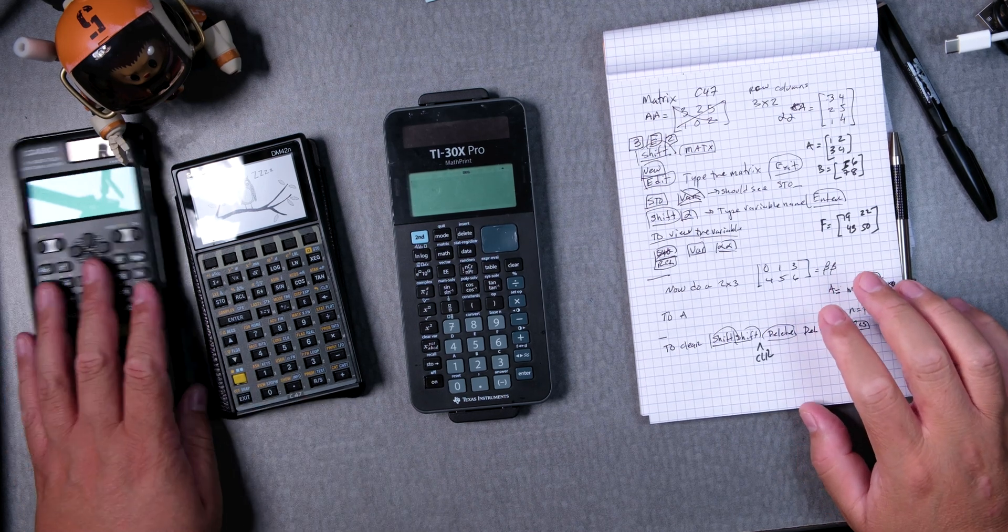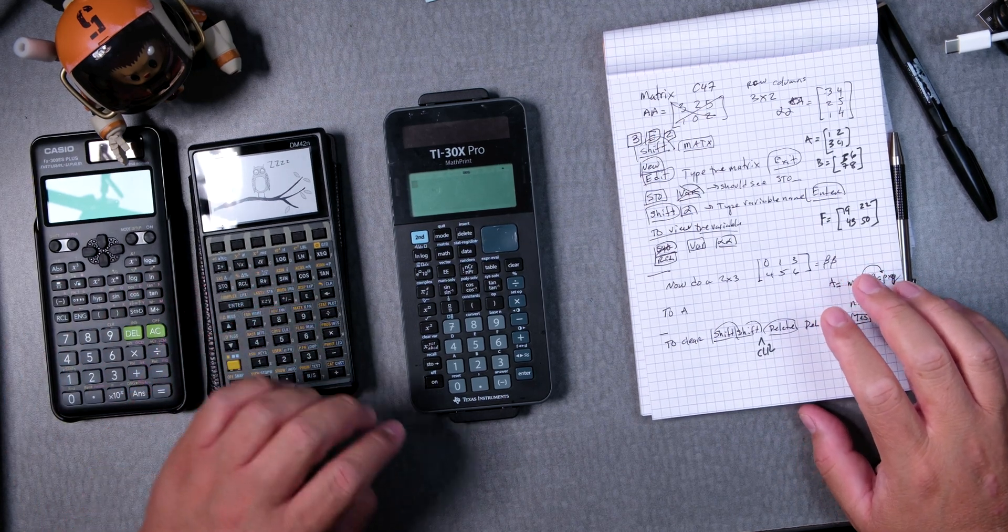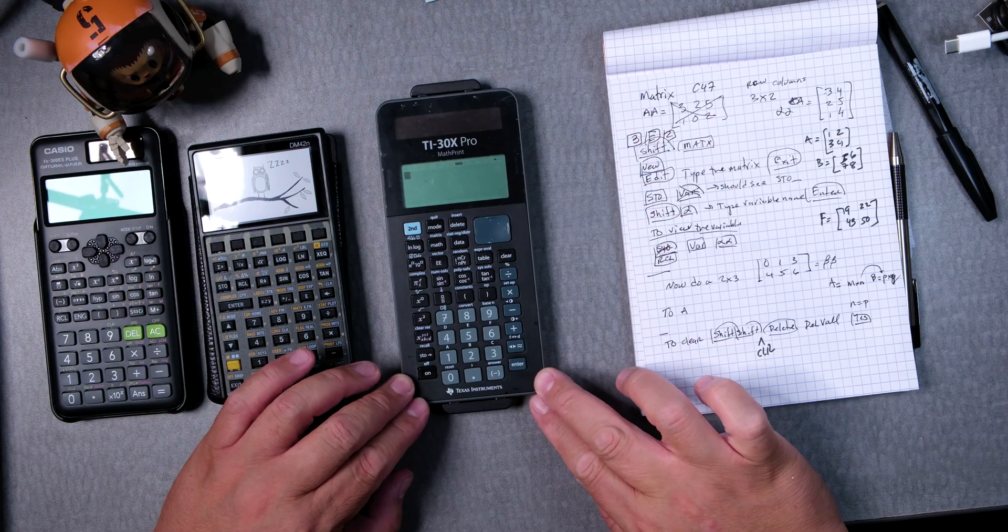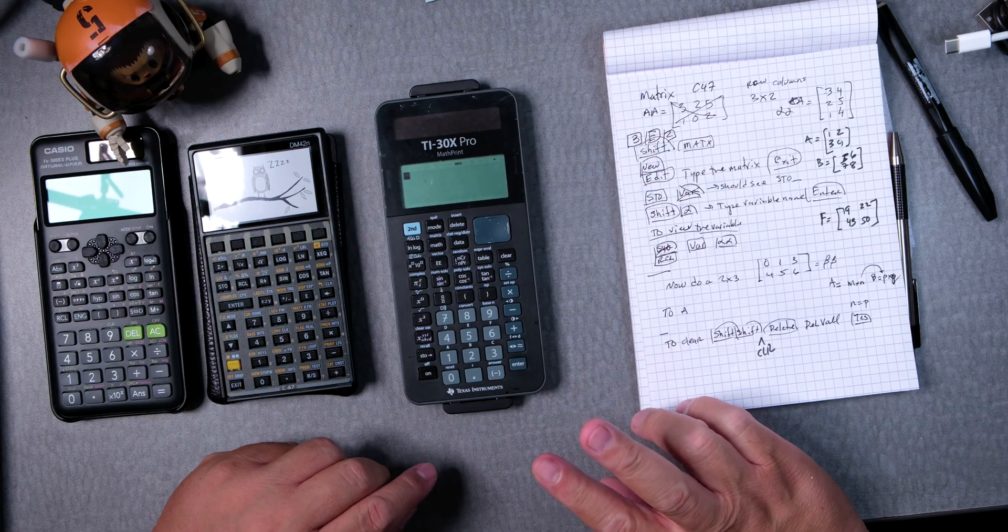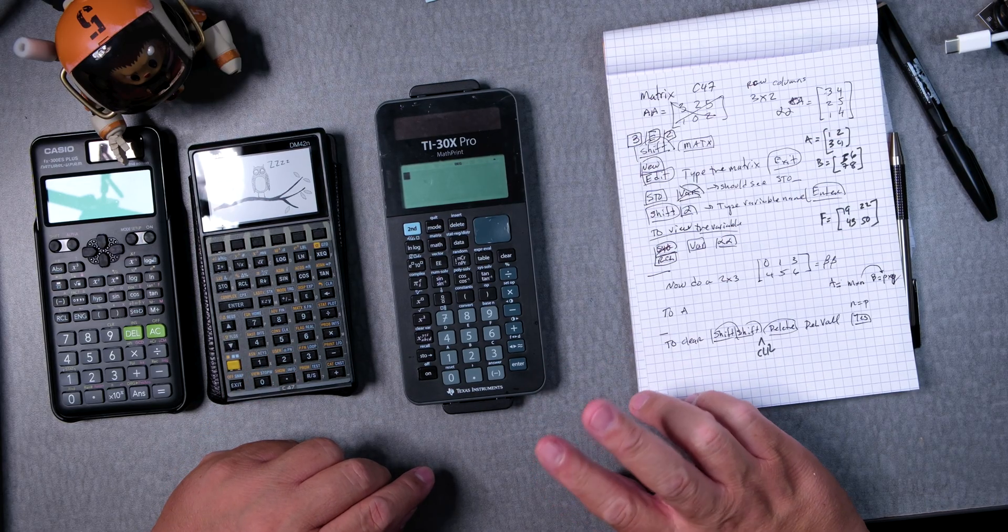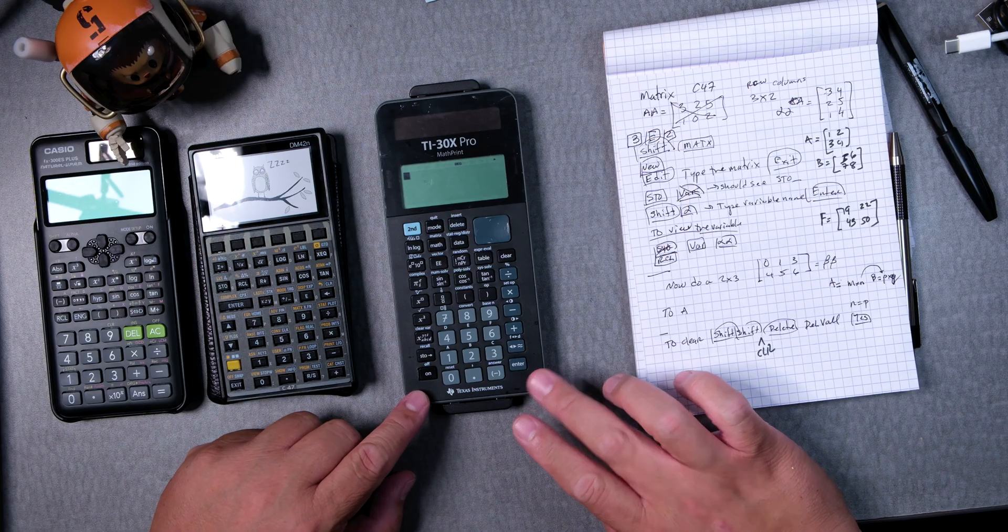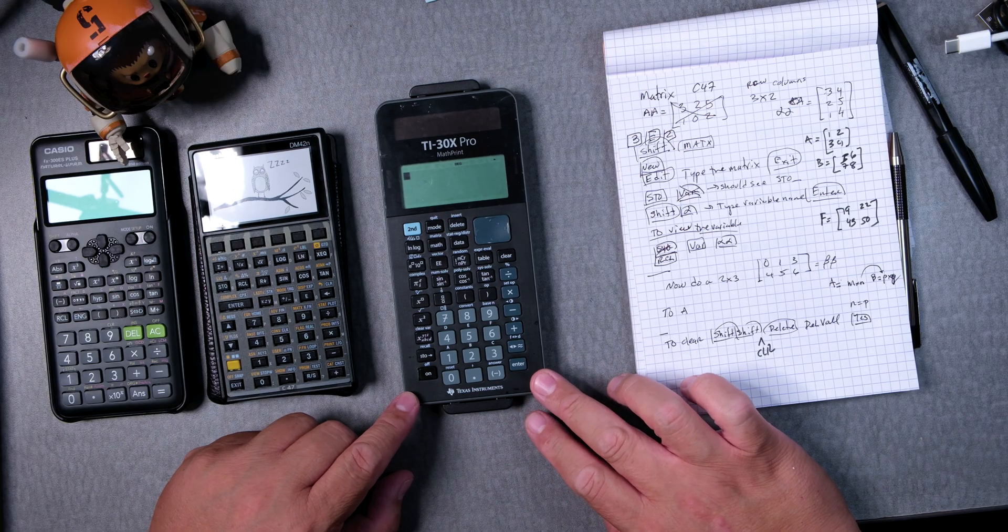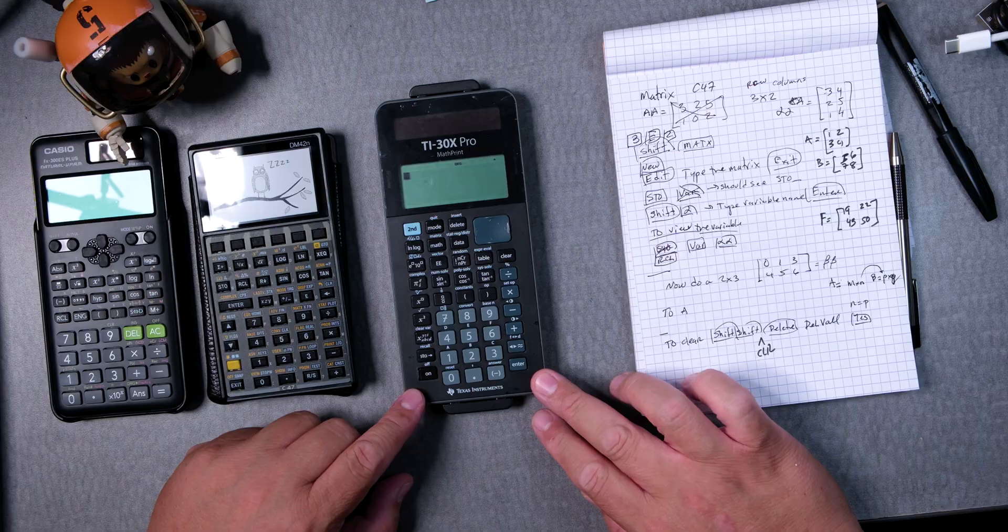Hello everyone, welcome back. What we're going to do is multiply two matrices using the TI-30X Pro math print. So how do we do that?